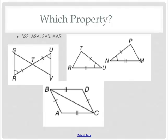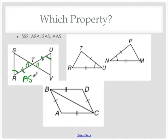Let's look at these and see which property we're using. In the first picture in the top left corner, we have one pair of angles and one pair of sides. Just based on that given information we'd use none of these, but I know that all vertical angles are always congruent. So we have an angle and an angle with the side in between — that's angle, side, angle.